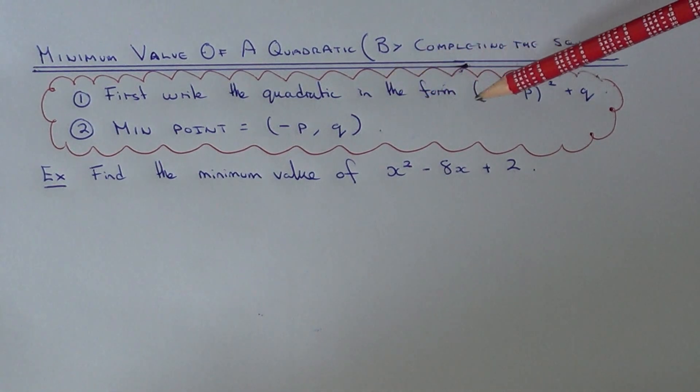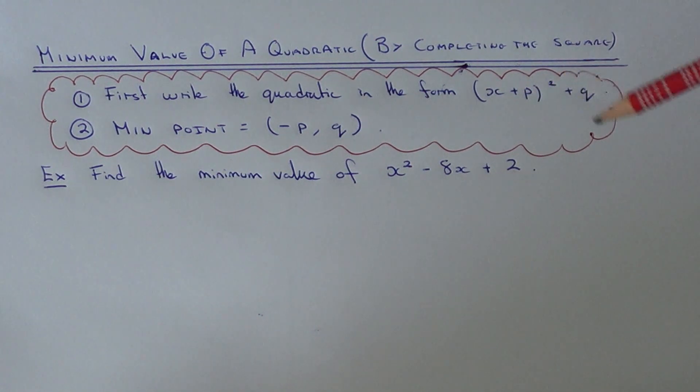First of all you need to make sure you've completed the square, so you have to write it in the form x plus p squared plus q. If you don't know how to do this then watch my other video on completing the square.